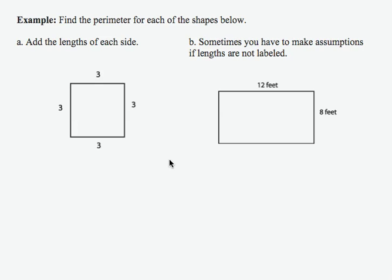In this example, we're going to find the perimeter for each of the shapes that are given. The first one, all the sides are given and there are no units.